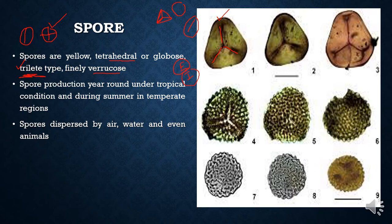Only two types of spore wall layers are present: outer exine and inner intine. The outer exine is much thicker than the inner intine, and all the ornamentation seen on the spore surface is due to the exine. The spores are dispersed by air, water, and even by animals. Because the leaves climb and reach great height, spores are mostly dispersed by air to great distances, which is one of the reasons the distributional range of Lygodium becomes huge.